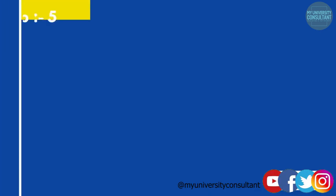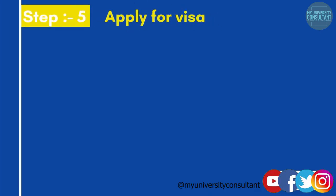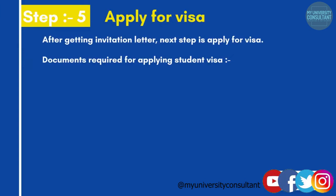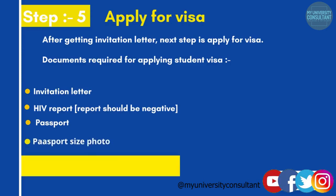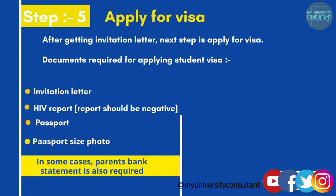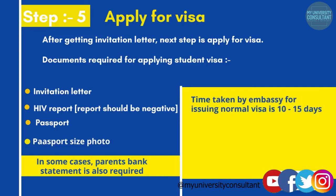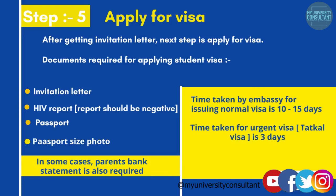Step five is apply for visa. After getting the invitation letter, the next step is to apply for a visa. Documents required for applying for a student visa are: first, your invitation letter; second, your HIV report — the report should be negative; third, your original passport; fourth, your passport-size photos; and in some cases, your parents' bank statement. Time taken for a normal visa is 10 to 15 days, and for an urgent visa, it takes three days.